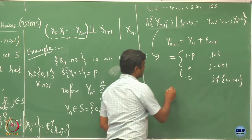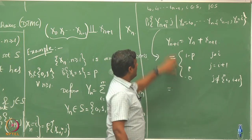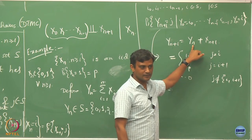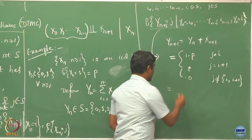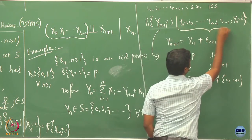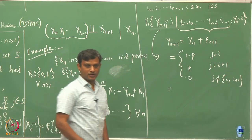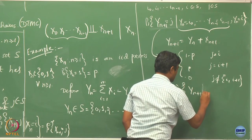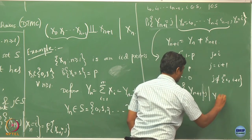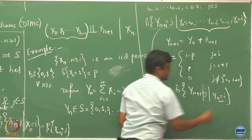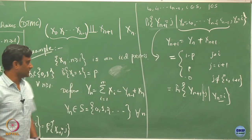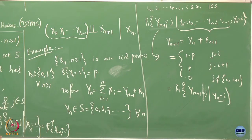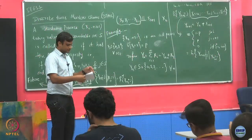To compute this probability, I only needed to know the current value of Yn — nothing else. So these past values are immaterial. Because of that, Yn does satisfy the discrete time Markov chain property, as this exactly satisfies our defining condition.